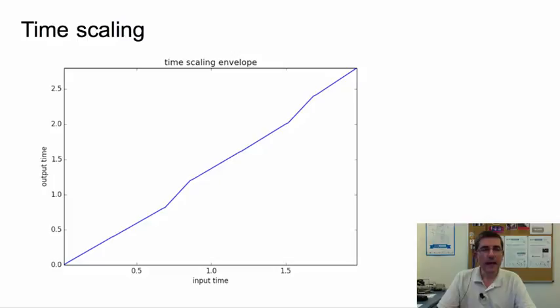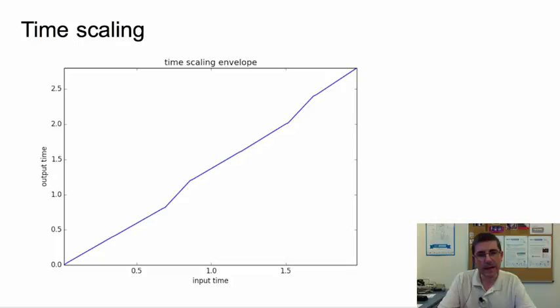As an example, the scaling factor is applied to a particular sound through a time-varying envelope. The horizontal axis is the input time, and the envelope assigns an output time to every input time, changing the reading position and modifying the total length of the sound.